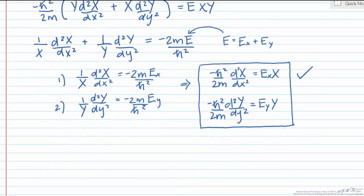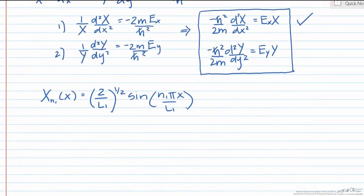So that means our normalized x function is going to be the square root of 2 over l1 times sine of n1 pi x over l1, and our normalized y function is going to be the square root of 2 over l2 times the sine of n2 pi y over l2.